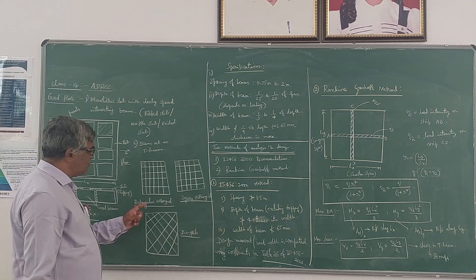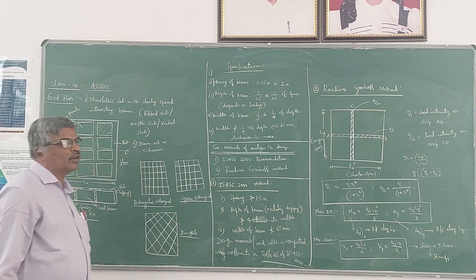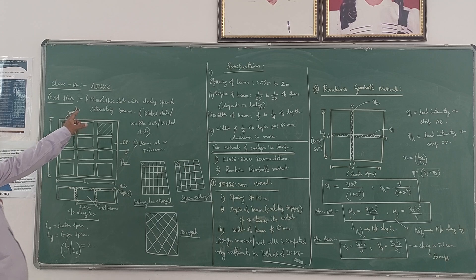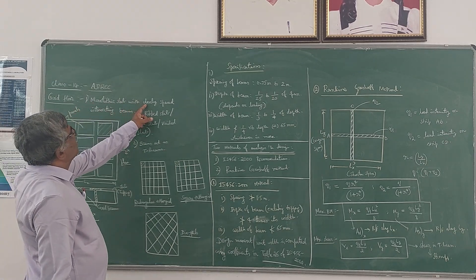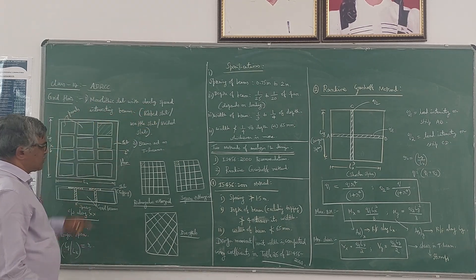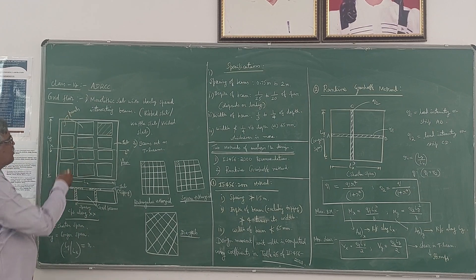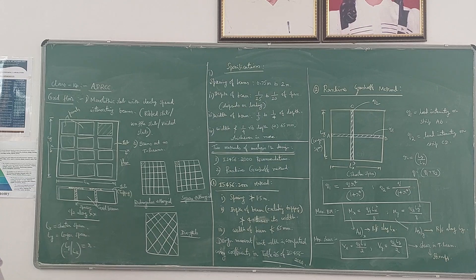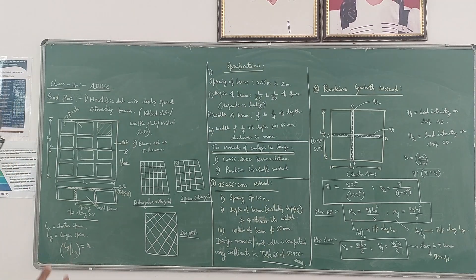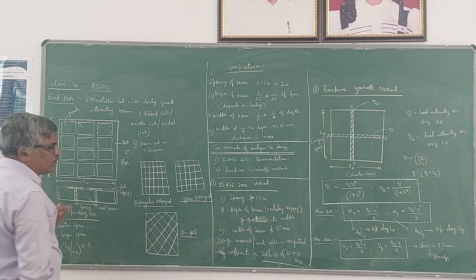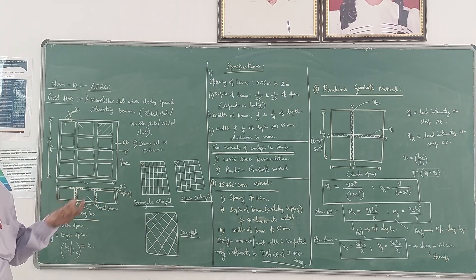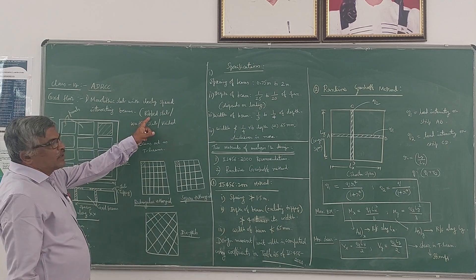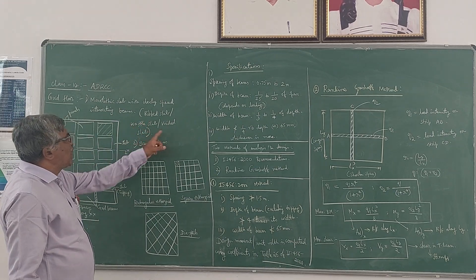We will discuss the design of a square orthogonal grid beam here. In a grid floor, they are constructed monolithically with closely spaced intersecting beams running in both directions. It is essentially a two-way slab design. They are also called ribbed slab, waffle slab, or wide-gate slab.